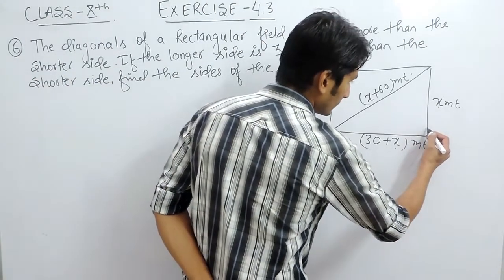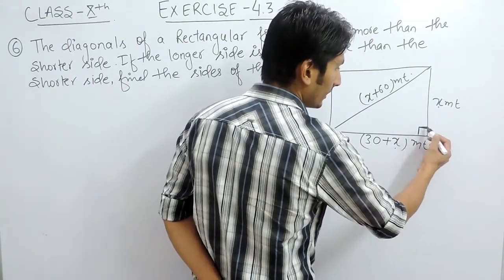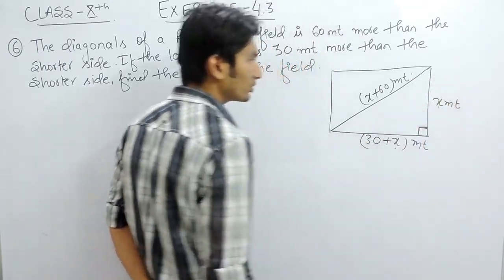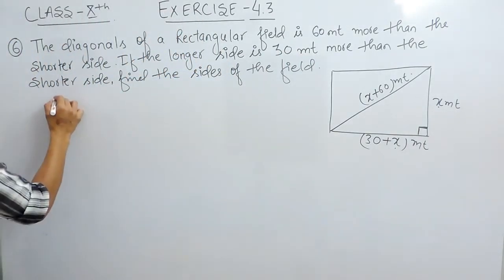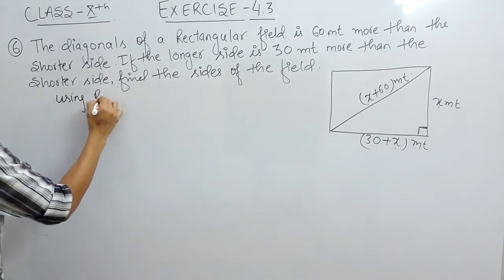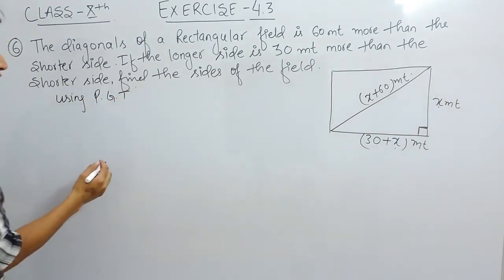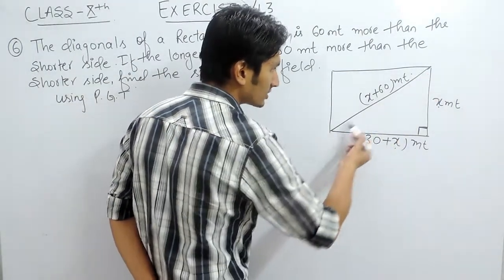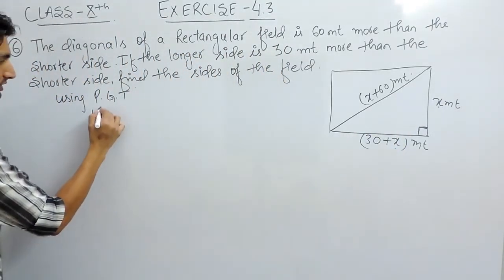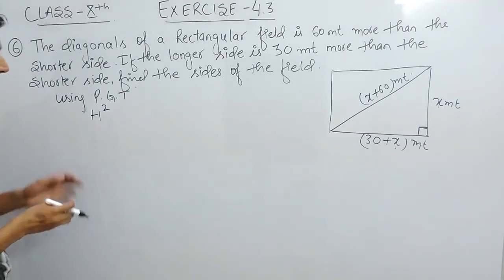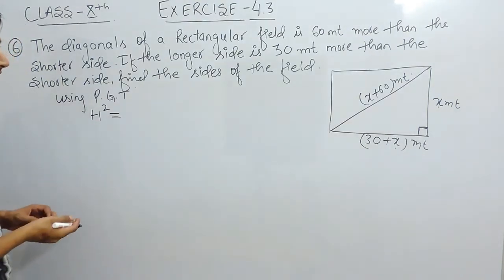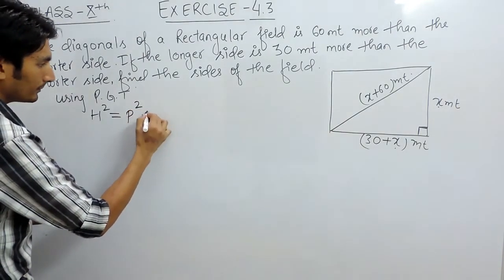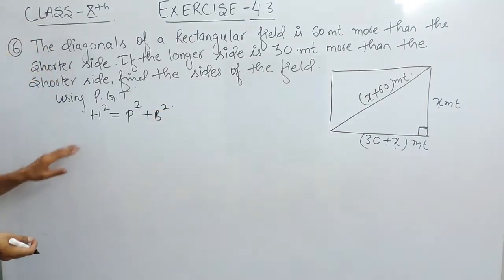Now we know that in a rectangular field this should be a right angle, forming a right angle triangle. In this right angle triangle we can use the Pythagoras theorem. The Pythagoras theorem says: in any right angle triangle, the square of its longest side — the hypotenuse — is equal to the sum of squares of the other two sides: perpendicular squared plus base squared.